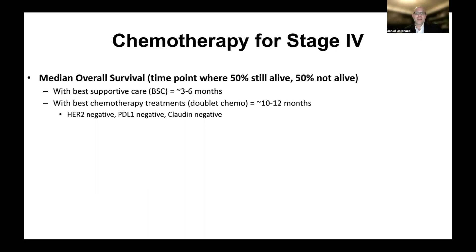It's important to understand what median means. It just means that if you look at a large group of patients, half are still alive and half are not. That goes for any median survival we discuss — it doesn't indicate what's going to happen to any one person. Some people do much better than these medians, and unfortunately some do worse. This is just the halfway mark, but it is a good measure for comparing newer therapies to see if we can improve that median survival. I also want to point out the concept of the tail of the curve — the far end of a survival curve — which shows there's always a subgroup of patients that do exceedingly better than these medians.